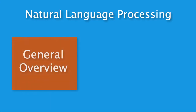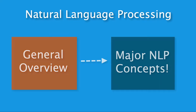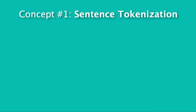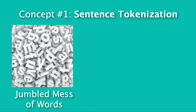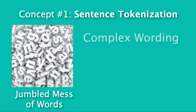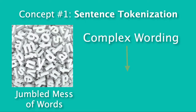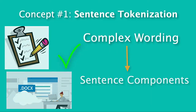Now that we have a general overview, let's dive in one level deeper and discuss some major NLP concepts that you should know. The first major concept is called sentence tokenization. I want you to think of a long, jumbled mess of words — how would you make sense of that? By tokenizing or segmenting the passage into individual sentences that can be understood and easily read. By breaking up complex, messy wording into its sentence components, sentence tokenization can help us out immensely when we try to write quick summaries and scrape long documents of text.